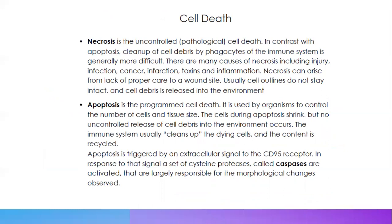Necrosis and apoptosis are also involved in the production of cancer. Necrosis is basically uncontrolled cell death. In necrosis, cell debris is not cleared through phagocytosis in the normal organized manner, which can lead to inflammation and contribute to tumor progression. Apoptosis, by contrast, is programmed cell death — it is organized and controlled, not uncontrolled like necrosis.